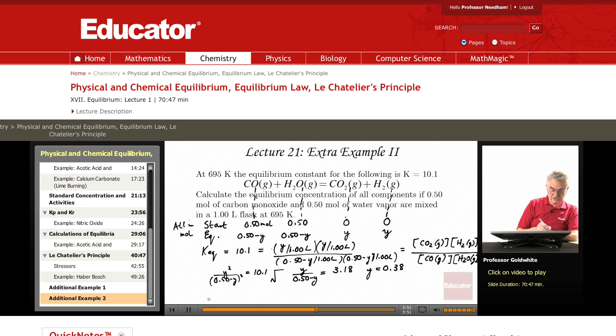So the equilibrium concentrations, which we can represent as the square brackets of CO2, equals the equilibrium concentration of H2, which equals 0.38 moles over 1.00 liters, moles per liter. And the equilibrium concentration of CO equals the equilibrium concentration of H2O, equals 0.5 minus 0.38, which equals 0.12 moles per liter.